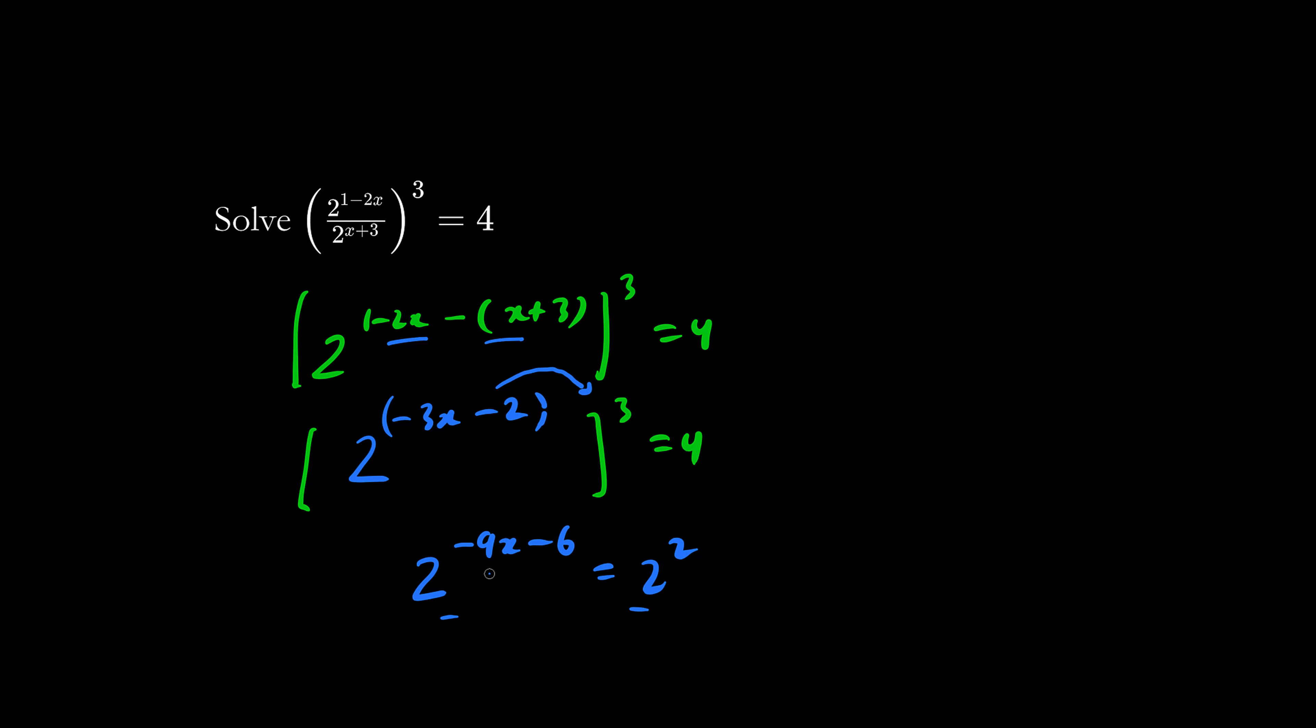The bases are the same and so we can equate the exponents. Negative 9x minus 6 equals 2.